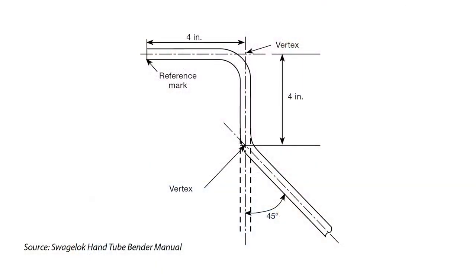When making bends, it may be helpful to sketch the layout. This drawing shows a layout with a 90 degree bend, 4 inches from the end of the tube, and a 45 degree bend, 4 inches from the center or vertex of the first bend. The vertex is where the tube center lines that form the angle intersect.